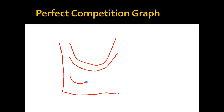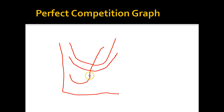Marginal cost is a checkmark-shaped curve, passing through the average total cost and average variable cost curves at their minimum points. The shapes of the ATC and AVC curves are based on the marginal cost curve. If marginal cost is lower than the average total cost, the additional cost of producing a good is less than the average cost, so the average cost drops. When the marginal cost equals the average total cost, the cost of producing a good equals the average cost, and as marginal cost rises, average total cost rises along with it. The same relationship occurs with the average variable cost curve.